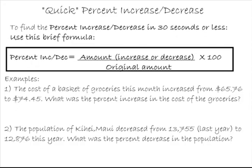And it's simply the percent increase or decrease is equal to the amount. What is the amount? Divided by the original amount, how much it's increased or decreased, divided by the original amount times 100.